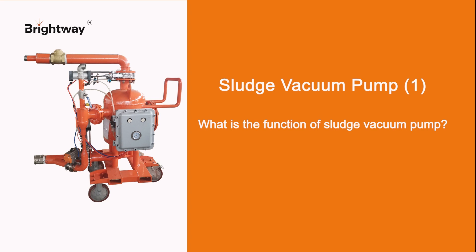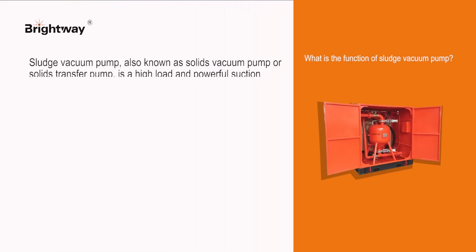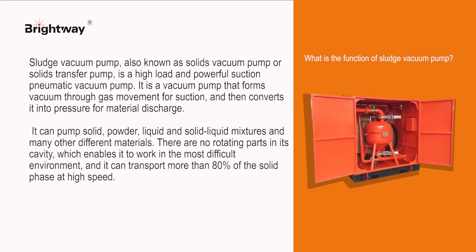What is the function of a sludge vacuum pump? A sludge vacuum pump, also known as a slurry vacuum pump or slurry transfer pump, is a high-load and powerful suction pneumatic vacuum pump. It forms a vacuum through gas movement for suction, then converts it into pressure for material discharge.